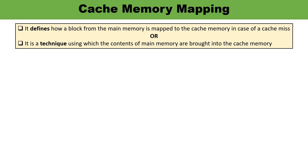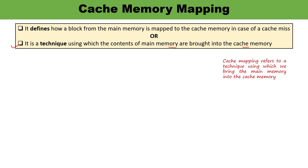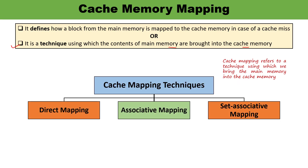Let us talk about memory mapping. Memory mapping is a technique via which the contents from main memory are copied into the cache memory. There are three mapping techniques: direct mapping, associative mapping, and set associative mapping. I have discussed these in detail in a previous video, but in this particular video, I shall be talking about associative mapping.